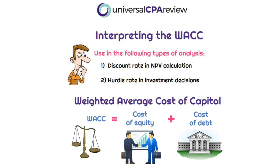Typically, a company is going to want a return on a project or investment that is greater than their weighted average cost of capital. Because if the return is less than their WACC, that means they're actually losing value on their equity. Always remember: if a company is contemplating a project or investment, the return on that project should be greater than the weighted average cost of capital. We'll practice this more with multiple choice questions and simulations, but that's the key basis for how to interpret WACC and understand why the CPA exam wants you to know this.